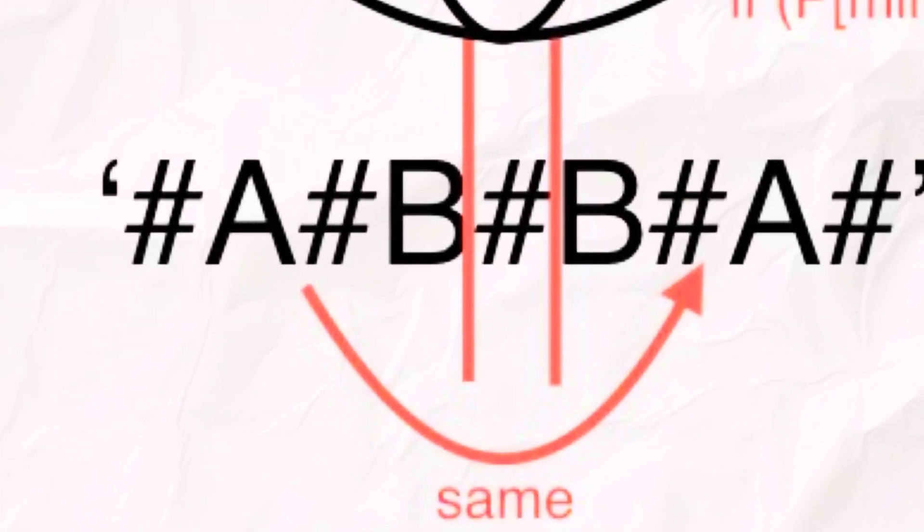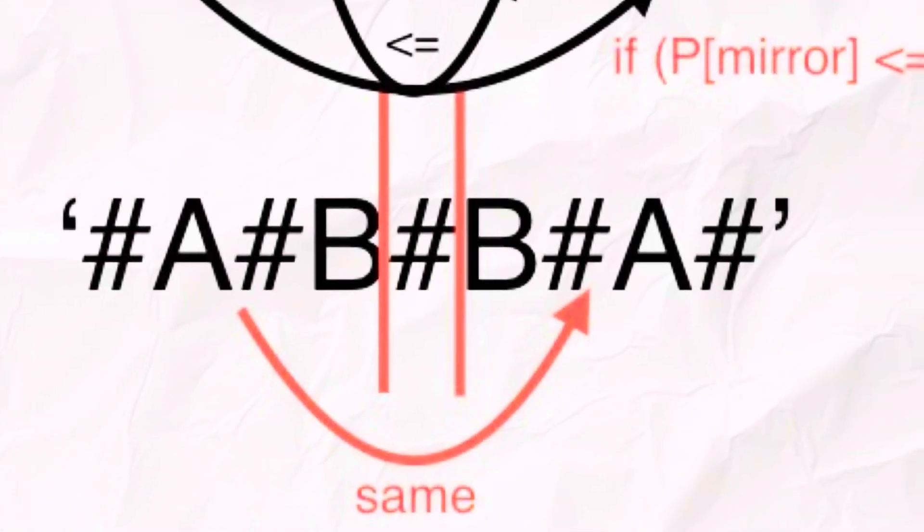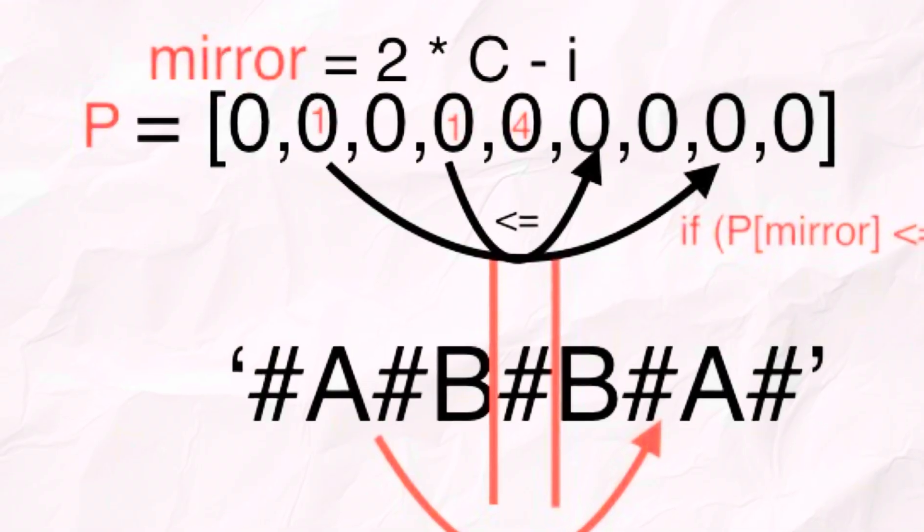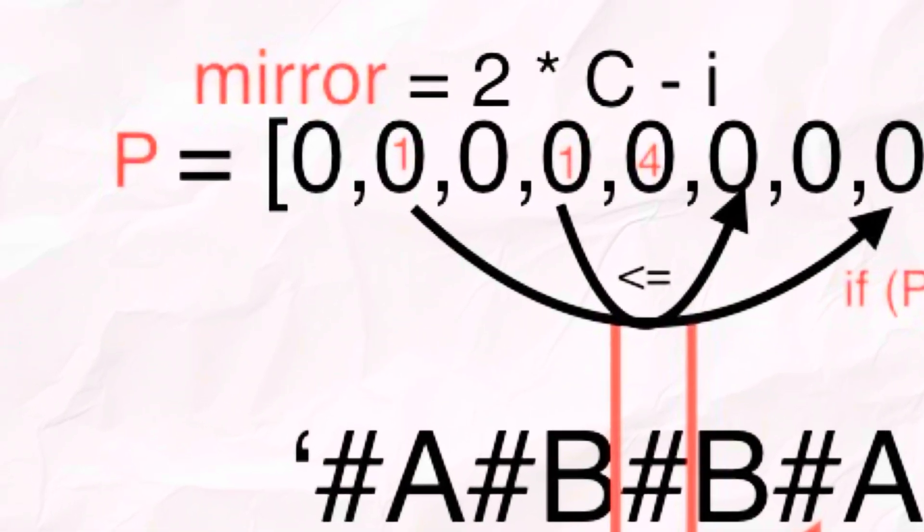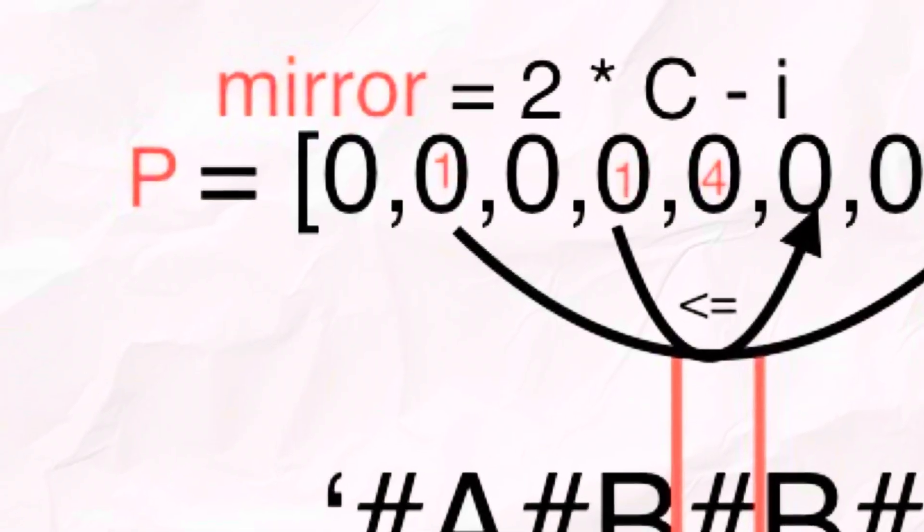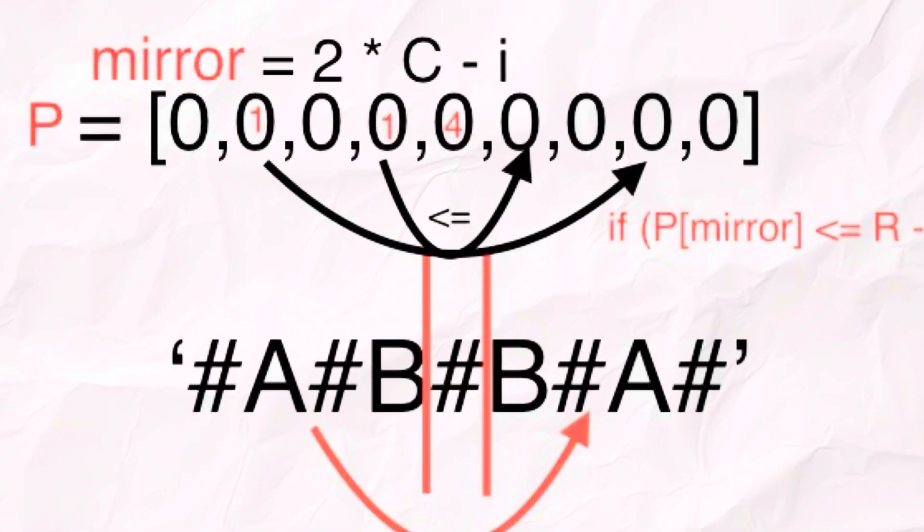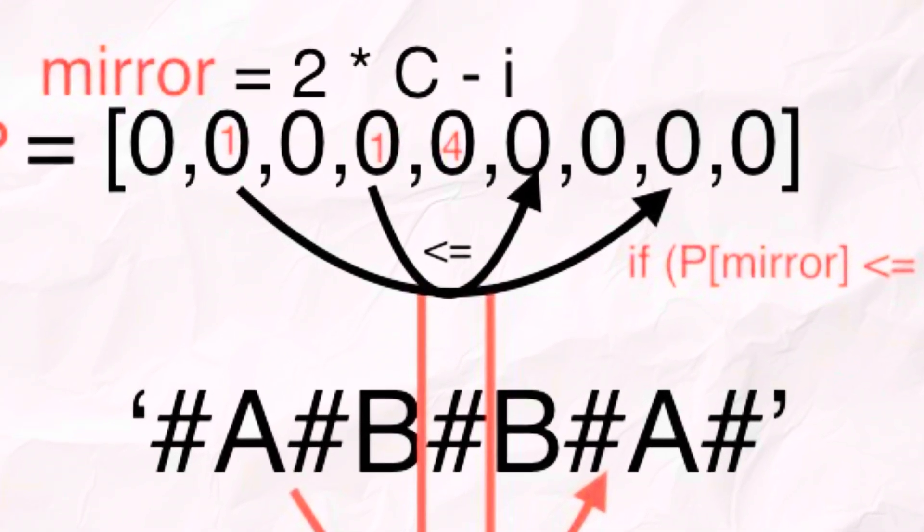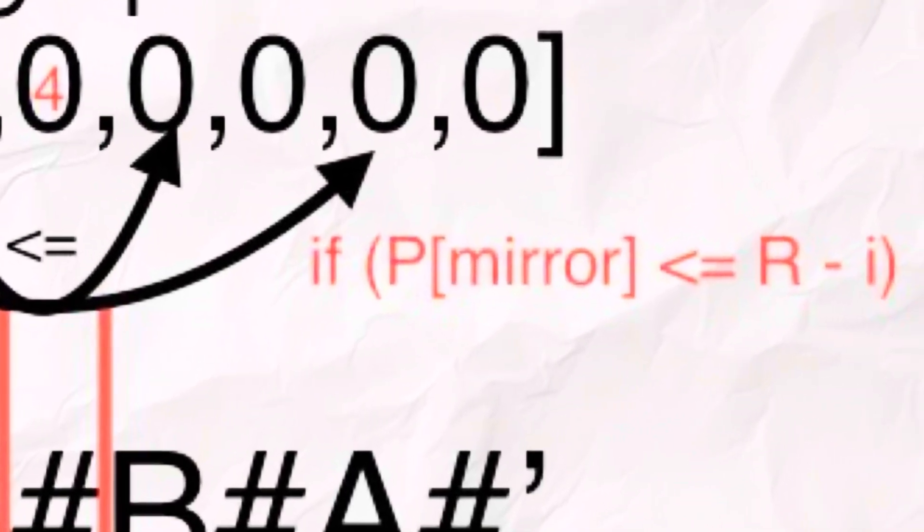Here is the idea. If you are standing inside a symmetric pattern, then whatever happens on your left is likely mirrored on your right. We define mirror as two times c minus i. That's the position on the opposite side of the center. So if we already know the length of the palindrome at mirror, then we can assume that one at i has at least the same length unless it touches the boundary r.